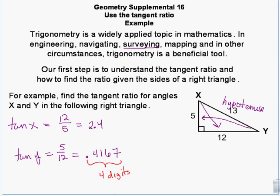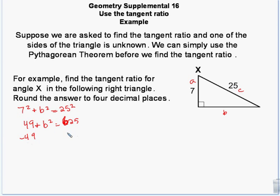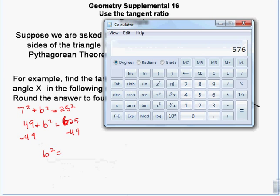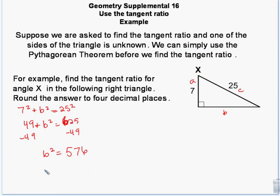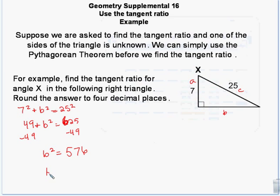Sometimes you're not given all three sides, but we have the Pythagorean theorem so we only need two sides to find the third. I've got 7 squared plus b squared equals 25 squared, so 49 plus b squared equals 625. Subtract 49 from each side and b squared equals 576. Taking the square root, b is 24.